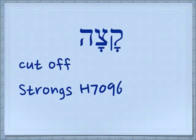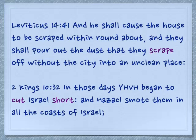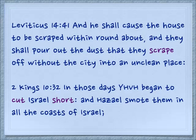And we have this associated verb, 'katseh,' which means to cut or to cut off. In Leviticus 14:41 — and he shall cause the house to be scraped within roundabout, and they shall pour out the dust that they scrape off without the city into an unclean place — talking about if you have a mildew infestation in your house comparable to leprosy, so we want to cut that part off. In 2 Kings 10:32 — in those days, Yehovah began to cut Israel short, and Chazael smote them in all the coasts of Israel.